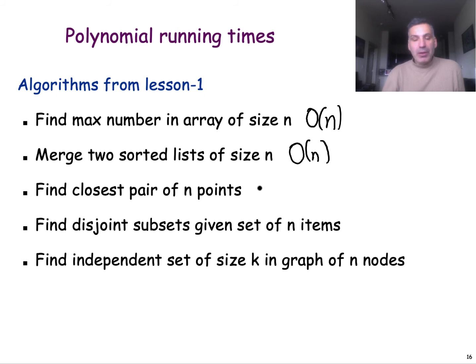We looked at an algorithm that can find the closest pair of n points that was quadratic. Later in the course, we will actually see a faster algorithm for solving that problem that can run in big O n log n. Finding the disjoint subsets given a set of n items, we looked at an algorithm that is big O n^3, and finding an independent set of size k in a graph of n nodes, we looked at an algorithm that is big O n^k, where k is a constant.